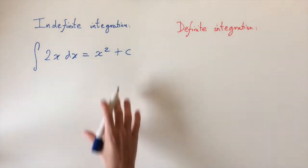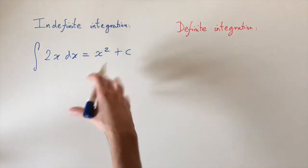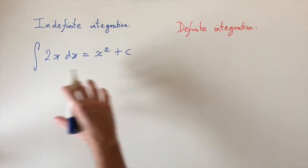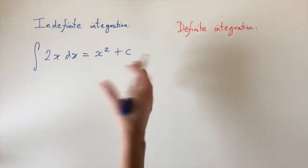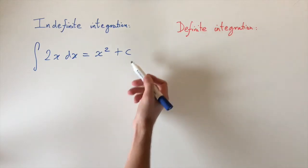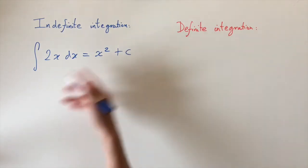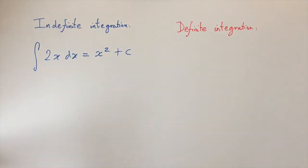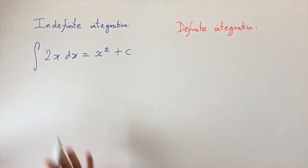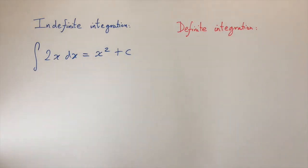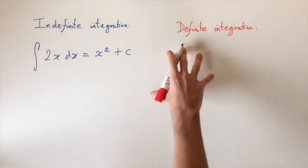The reason we add the constant is because if you think about differentiating, which is the opposite of integration, whenever we differentiate a constant it's just going to vanish. So all these functions for all the possible constants are a solution to this integral.